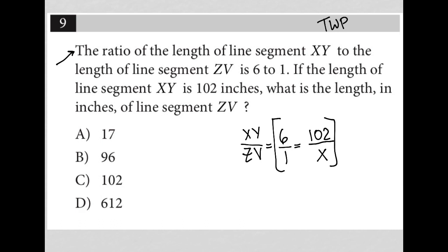The way that you solve a proportion is by cross-multiplying. I'm going to multiply diagonally this way first, which gives me 6X. Equals — then multiply diagonally the other way, which gives me 102.